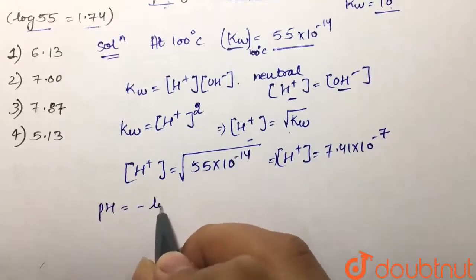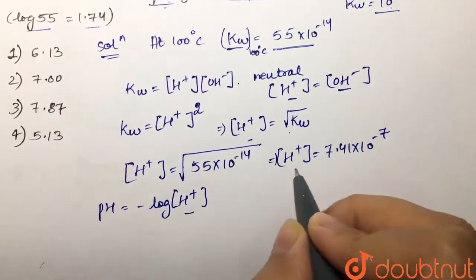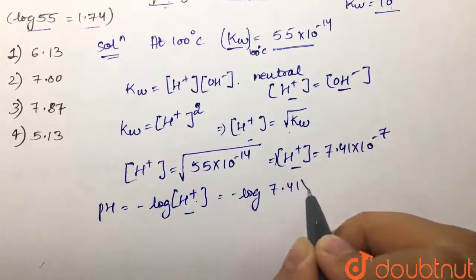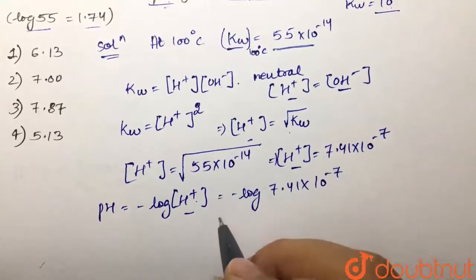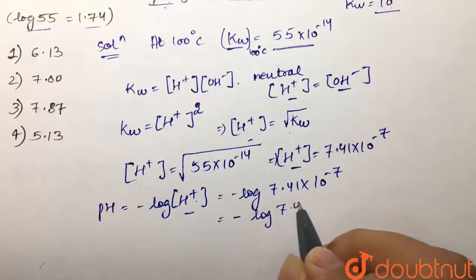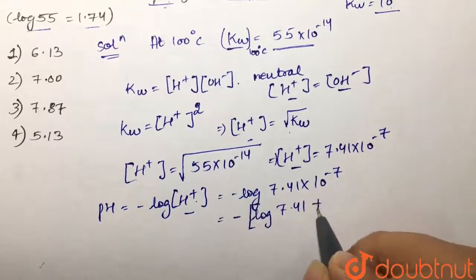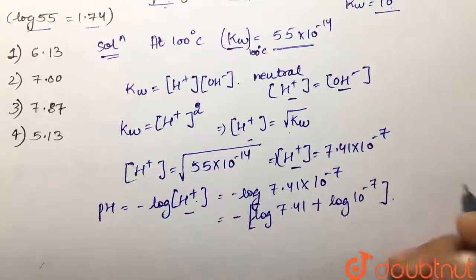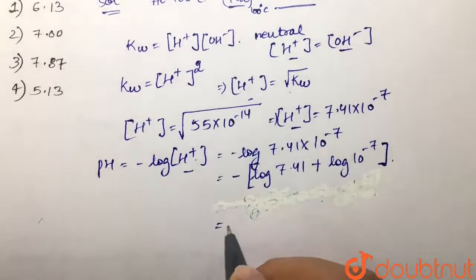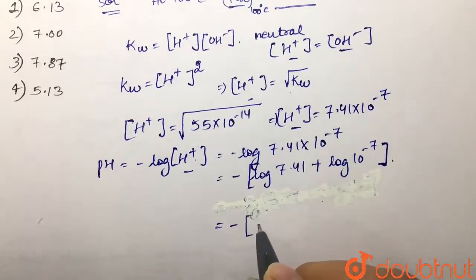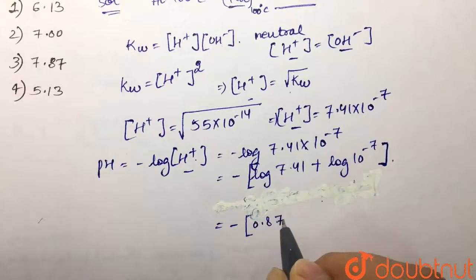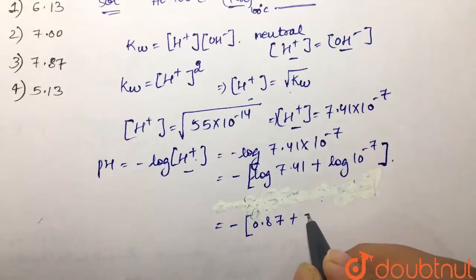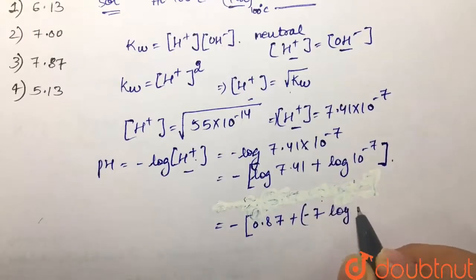We know that pH equals minus log of [H⁺]. Substituting, pH equals minus log of 7.41 × 10⁻⁷. Expanding the log: minus log(7.41) plus log(10⁻⁷). The value of minus log(7.41) is 0.87, and the log(10⁻⁷) term gives minus 7 times log(10).